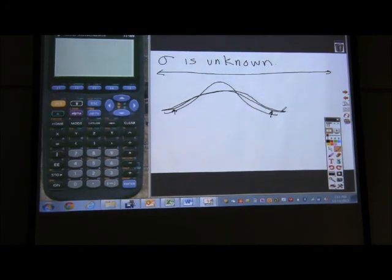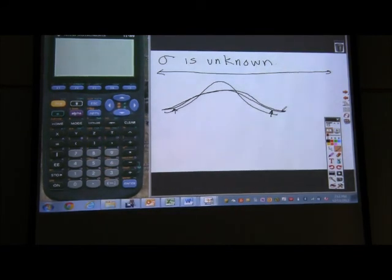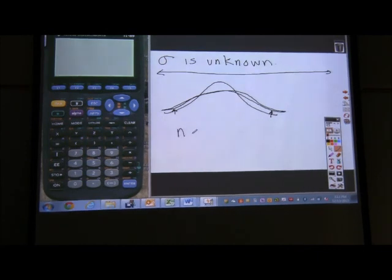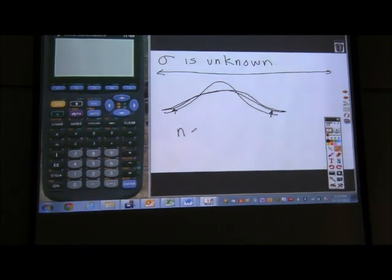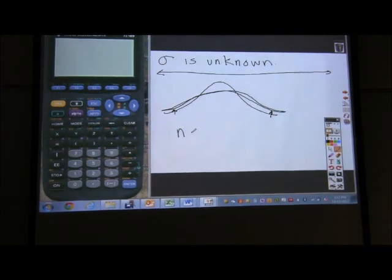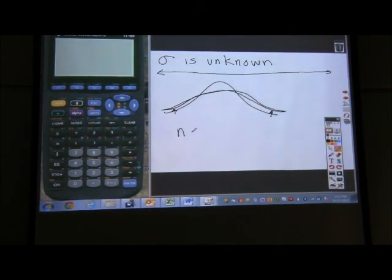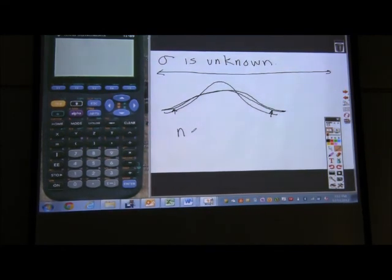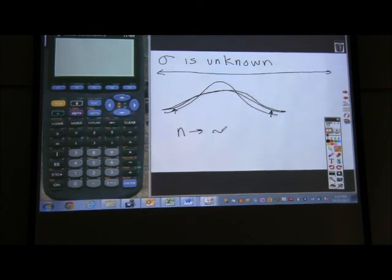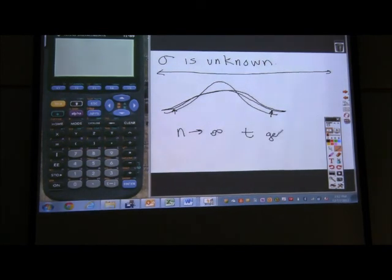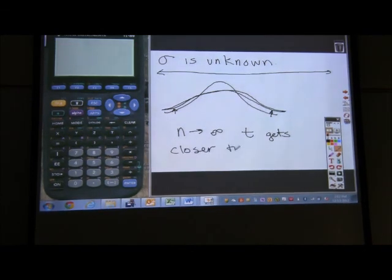It's very similar to normal distribution, but it's not quite the same. And what turns out is as your sample size gets bigger, t distributions are all based on sample size. So each different sample size has a different, slightly different shape of the graph. And as your sample size gets bigger, your t distribution looks exactly like a normal curve. But for smaller sample size, it looks less and less like a normal curve. So as n gets larger, your t distribution gets closer to a normal distribution.